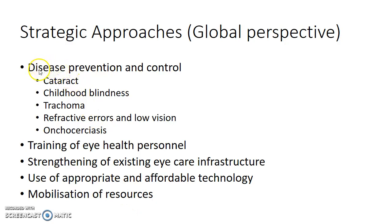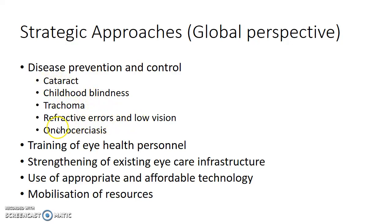For disease prevention and control, these are the five diseases which need to be controlled as part of Vision 2020: cataract, childhood blindness, trachoma, refractive errors and low vision, and onchocerciasis.